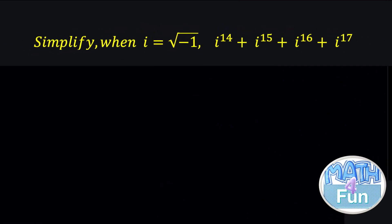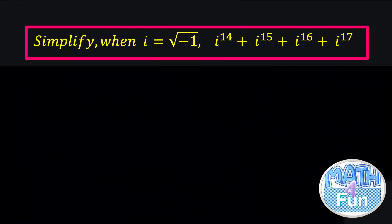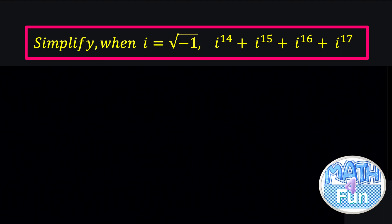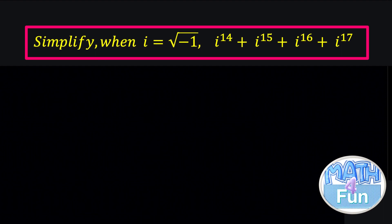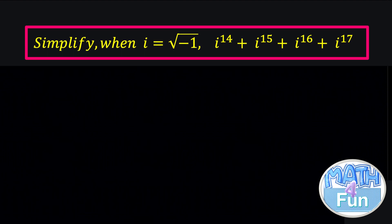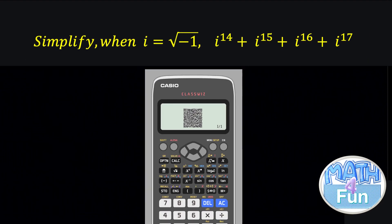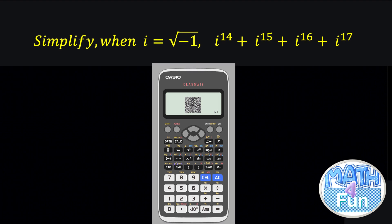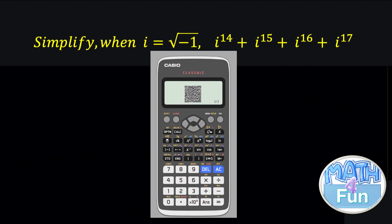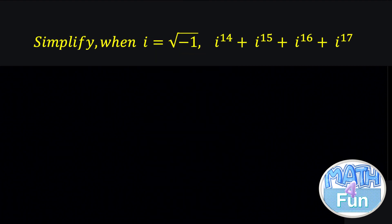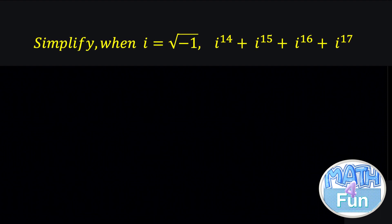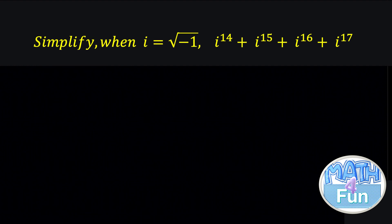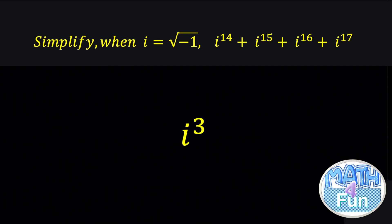Look at this question. They are saying simplify where i is equal to radical minus 1: i to the power 14 plus i to the power 15 plus i to the power 16 plus i to the power 17. We need to simplify it. Now, if you have the calculator fx991ex, you can put all of the expression on the calculator and get the final answer straightforward in one click. But if you don't have it, the previous types of calculator don't perform this operation because it is limited to i to the power 3 — i to the power 4 cannot be done with that calculator.